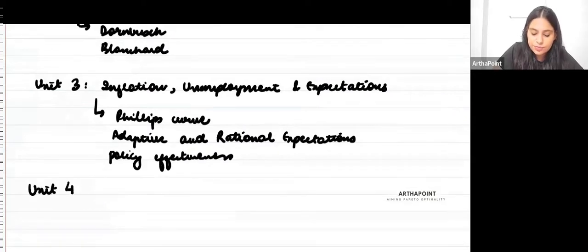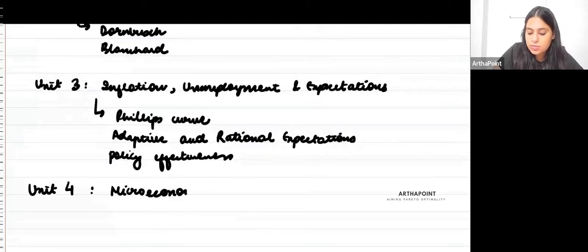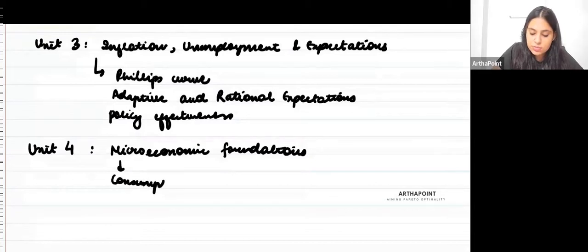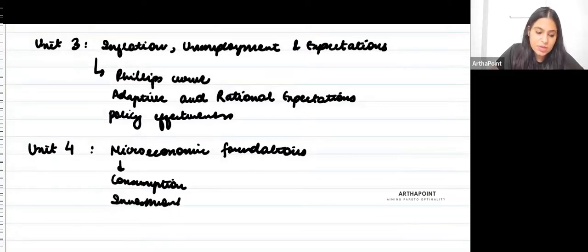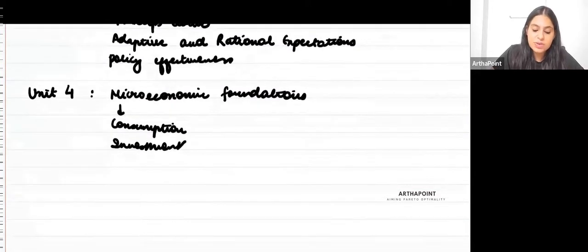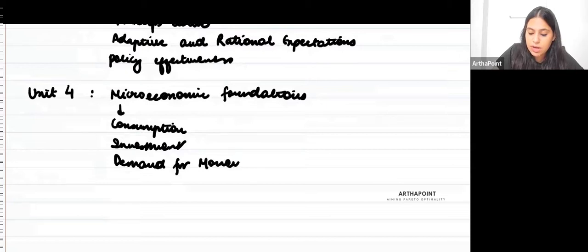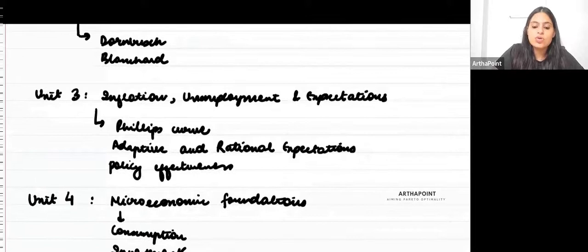Finally, unit 4 is going to be about microeconomic foundations. We are going to talk about three important foundations here: consumption, investment, and money demand. In consumption, we will talk about various hypotheses related to consumption. In investment, we would be talking about how investment differs across different concepts - business fixed investment, residential investment, and inventory investment. How are the three different from each other and what's the kind of theory that holds for each of these?